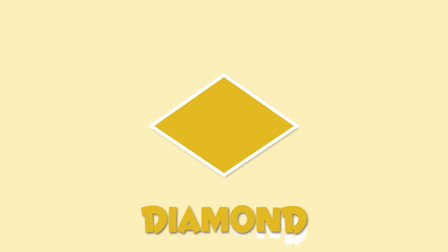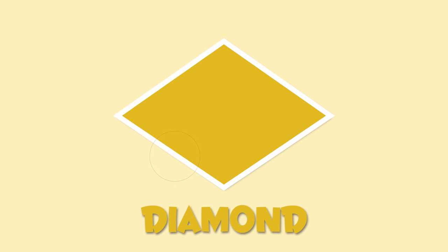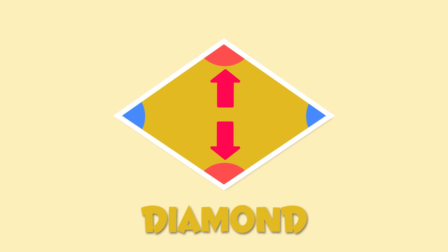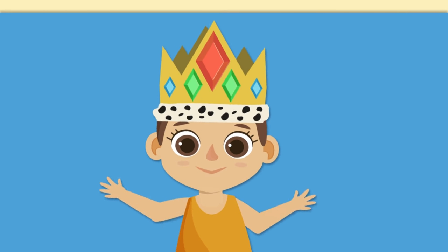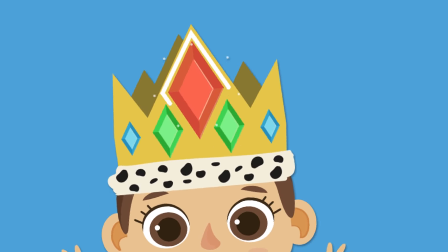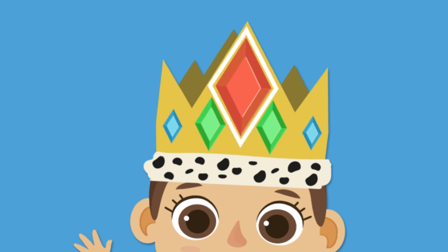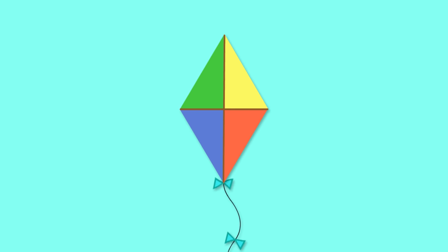This is a diamond shape. Its four sides are identical, but its angles are not. This angle and this angle are equal, and so are these two. A diamond looks like the jewel on this crown, or like this kite.